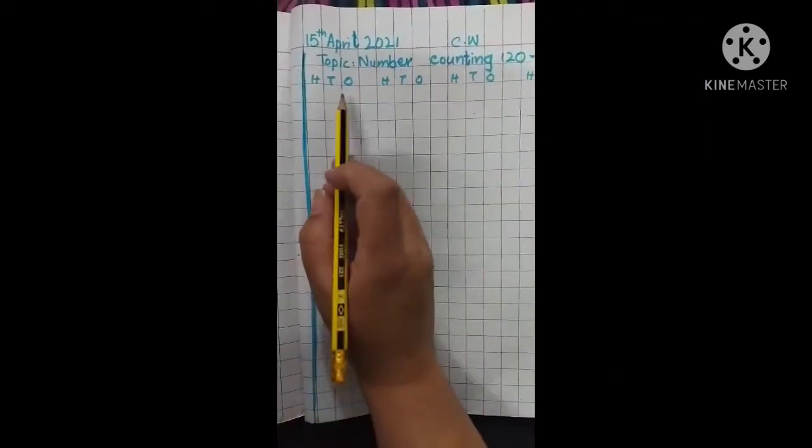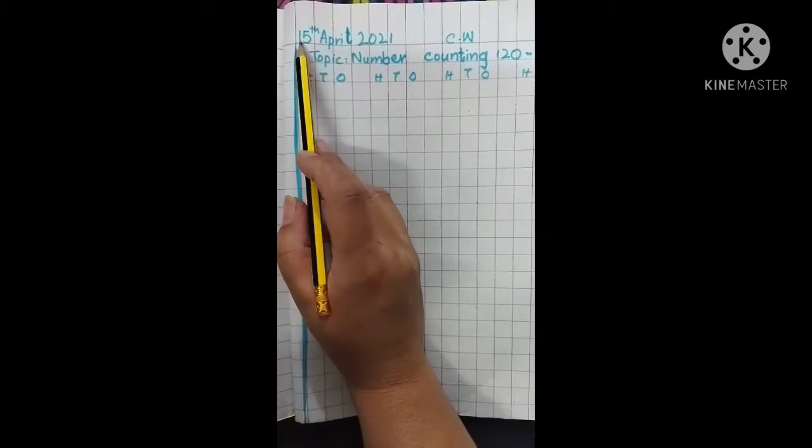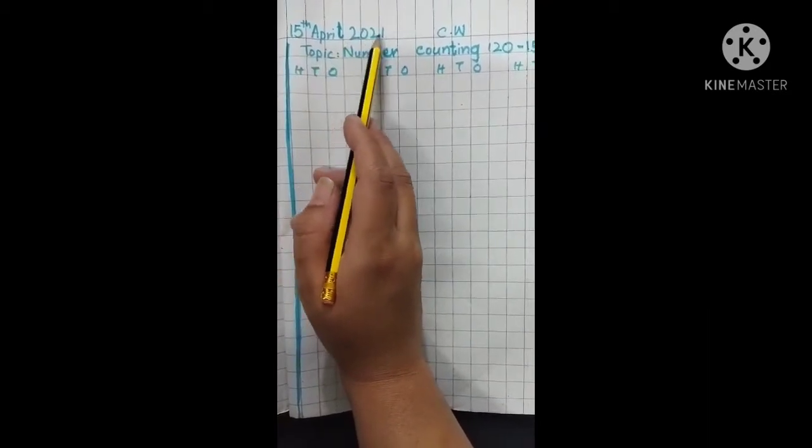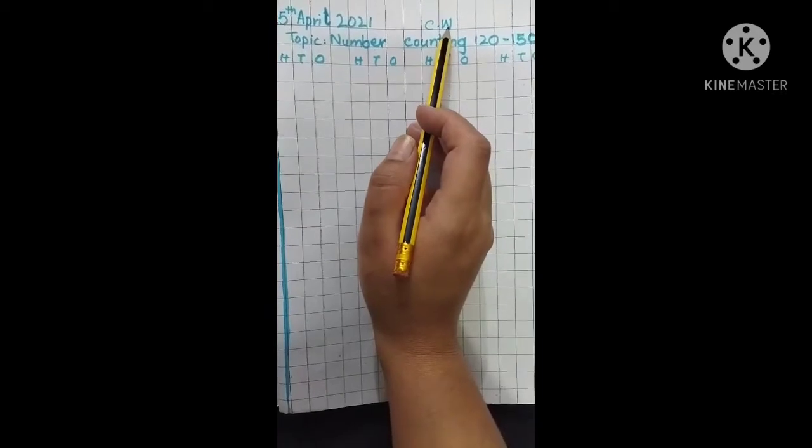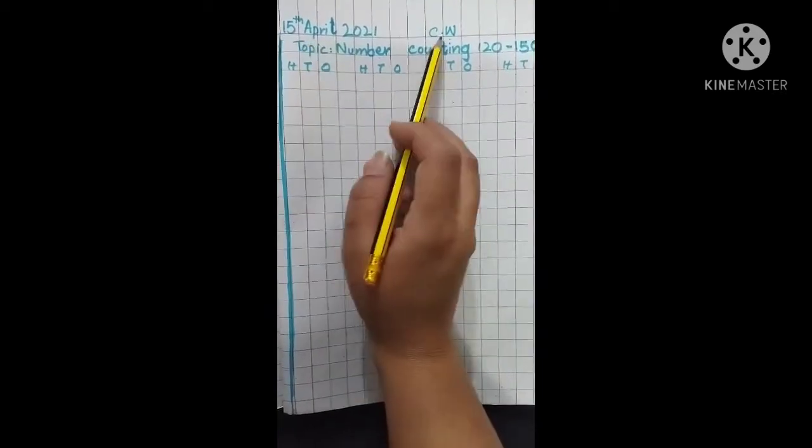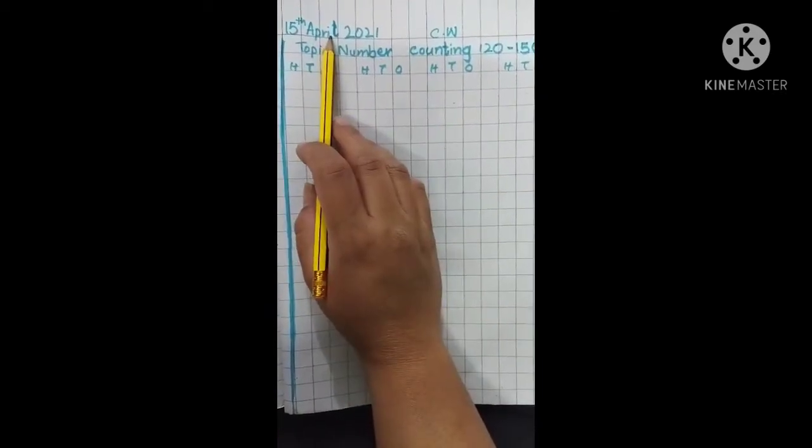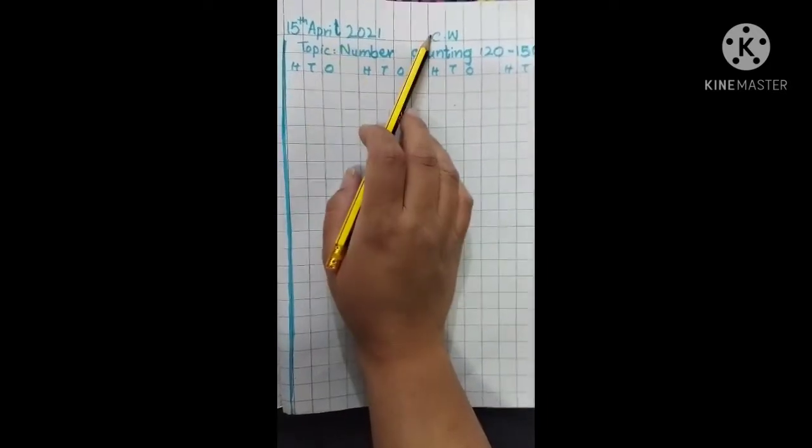Okay, now it's time to start your work in the copy. As I told you, today is 15th April 2021 and this is your classwork. So you will write C.W with the pencil. You will write this. Mama will help you, but you have to write this date.